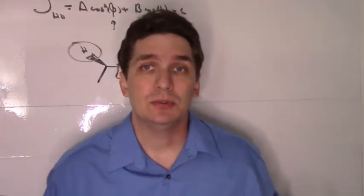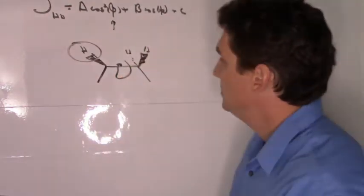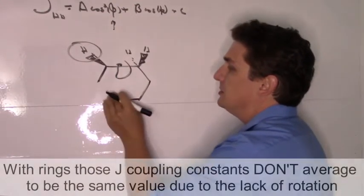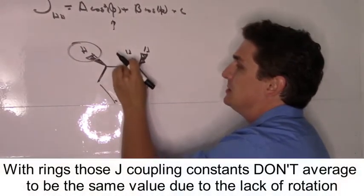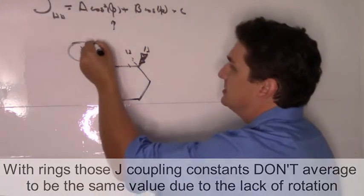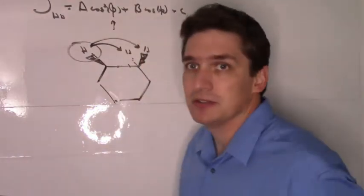What happens with cyclic molecules? When we go to a cyclic molecule, we don't get this conformational rotation anymore. Because of this, the J-coupling constants between adjacent hydrogens are different because they have different dihedral angles that don't average out.